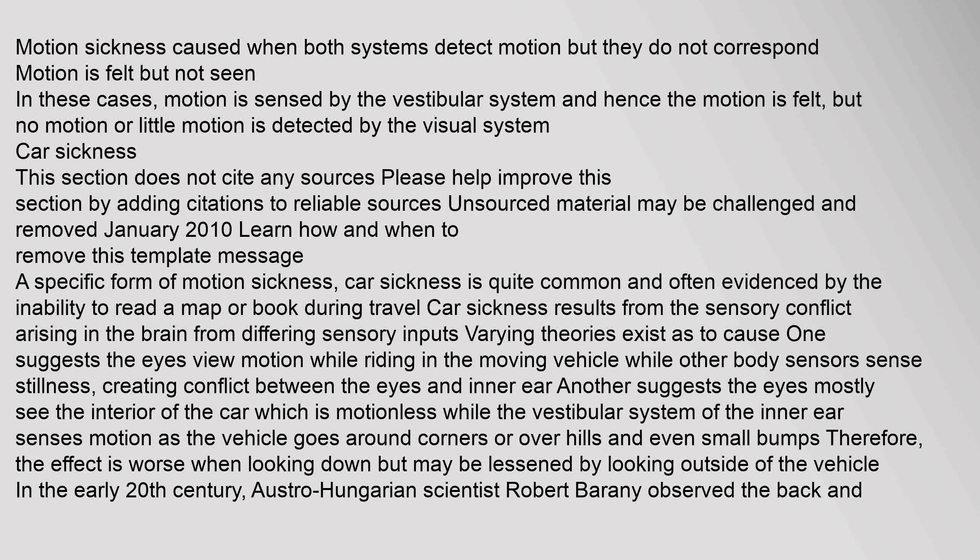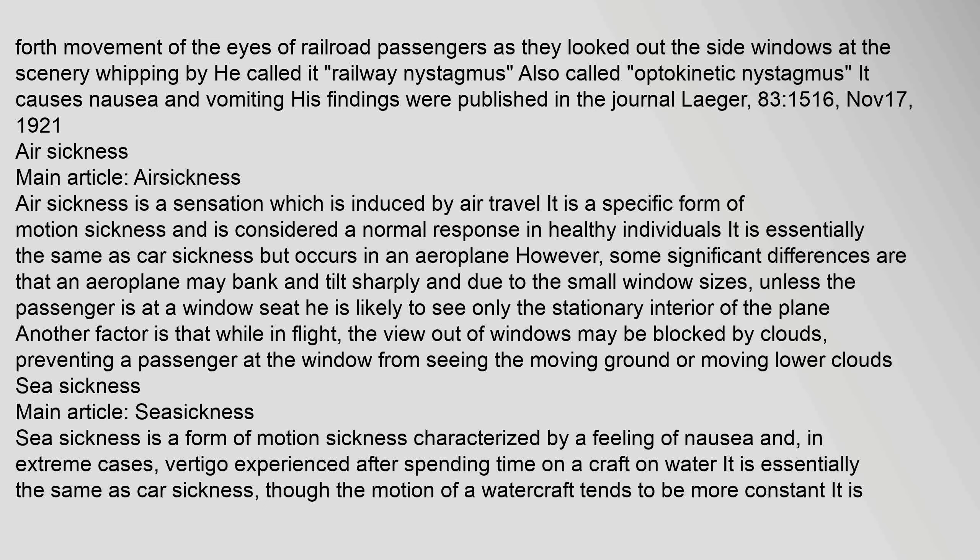Car sickness is a specific and quite common form of motion sickness, often evidenced by the inability to read a map or book during travel. It results from sensory conflict in the brain from differing sensory inputs. One theory suggests the eyes view motion while other body sensors sense stillness; another suggests the eyes mostly see the motionless interior of the car while the vestibular system senses motion as the vehicle goes around corners or over hills. The effect is worse when looking down but may be lessened by looking outside. In the early 20th century, Austro-Hungarian scientist Robert Barani observed the back-and-forth eye movement of railroad passengers looking out side windows at passing scenery — he called it railway nystagmus, also called optokinetic nystagmus.